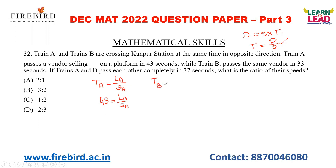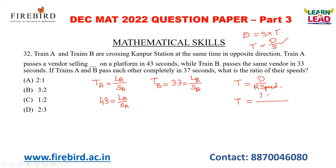Train B passes the same vendor in 33 seconds. So 33 = length of Train B / speed of Train B. Now, if Train A and Train B pass each other completely in 37 seconds — if there are two moving objects traveling in the same or opposite direction, you have to consider their relative speed. Time = distance / speed, but here you have to use relative speed. When there are two long trains crossing each other, the distance is the sum of the lengths of both trains. So: (length of Train A + length of Train B) / (speed of Train A + speed of Train B) = 37 seconds.